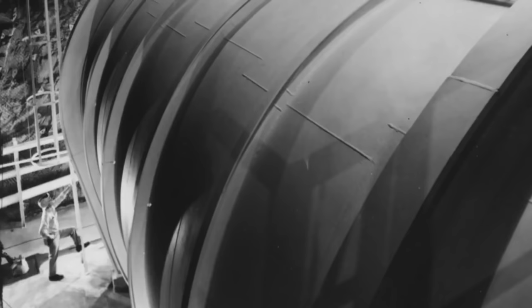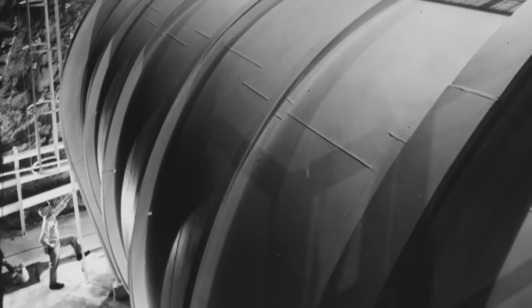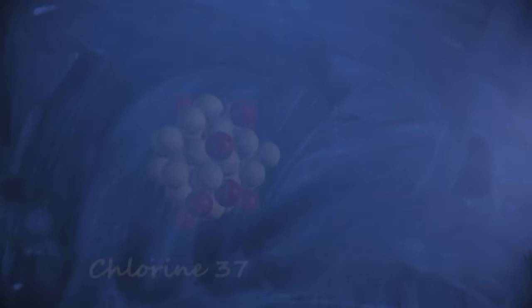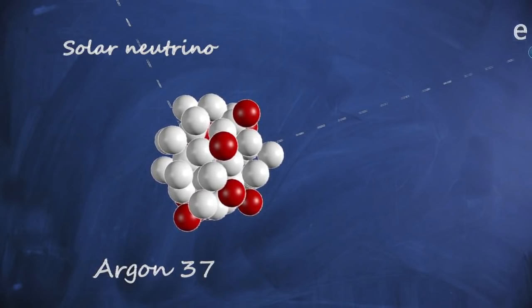The detector was a huge 380 cubic meter tank filled with a common dry cleaning fluid, tetrachloroethylene, which was chosen because of the amount of chlorine in the compound. Upon collision with a neutrino, a chlorine atom transforms into a radioactive isotope of argon, which can be extracted and counted.